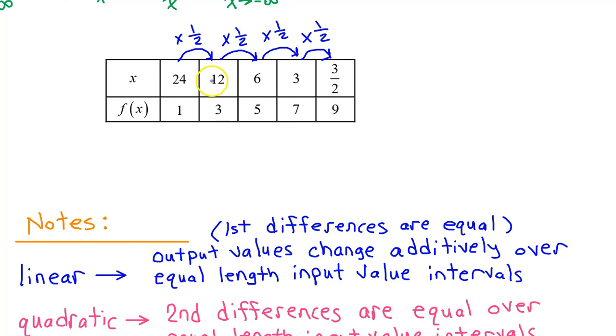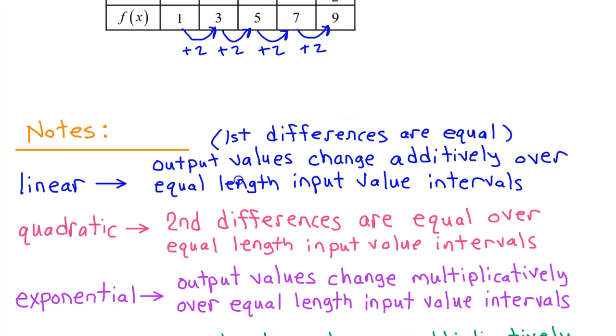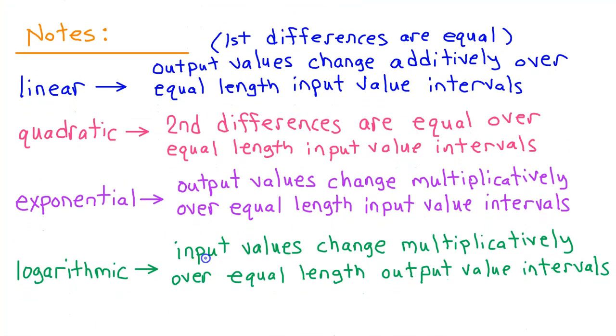Do we have equally spaced output values? From 1 to 3, that's plus 2. 3 to 5 plus 2 again. 5 to 7 plus 2 and 7 to 9 plus 2. So we indeed have input values that change multiplicatively over equal length output value intervals. A logarithmic model is best.